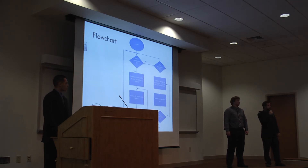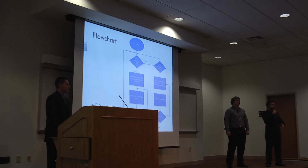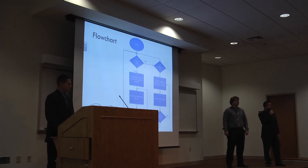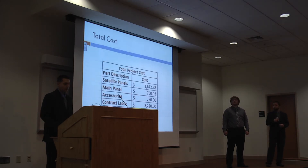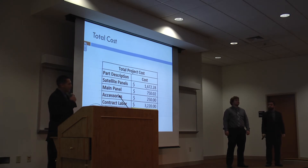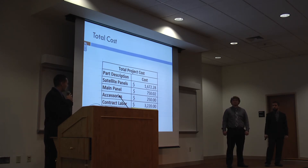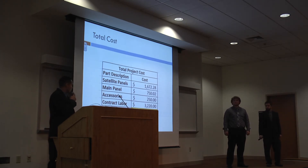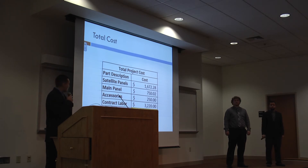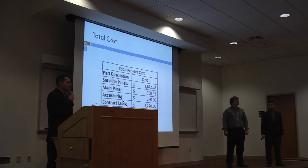This flow chart is a basic setup of how the PLC will be programmed to react when a certain push button is pushed and what lights or horns need to be turned on. For our total project cost: satellite panels are roughly $1,600, our main panel is about $750, accessories including ethernet, wiring, and the rails came out to about $250, and contract labor is roughly $3,200. Our total cost for this project to happen is right about $5,900.